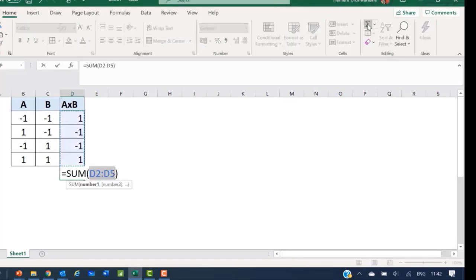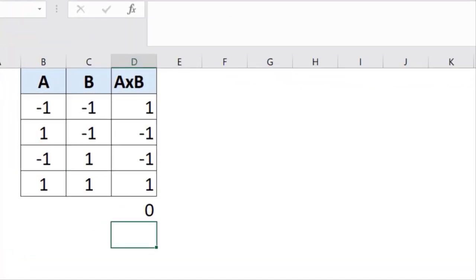Now let us see if it is orthogonal: it will total up to zero. So we can check the total, which is zero. Therefore we can say that columns A and B, or vector A and vector B, are orthogonal to each other.